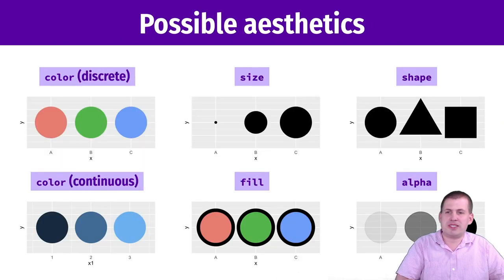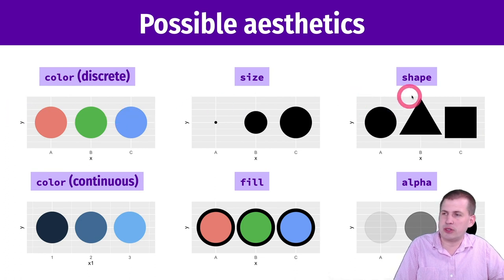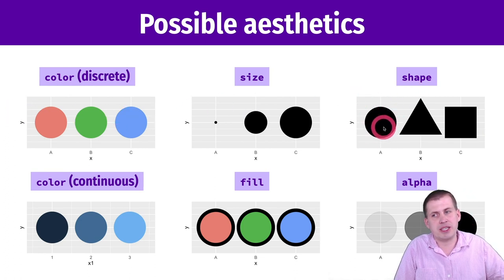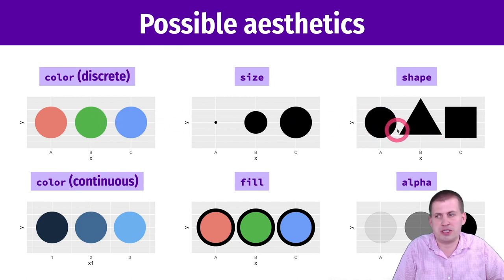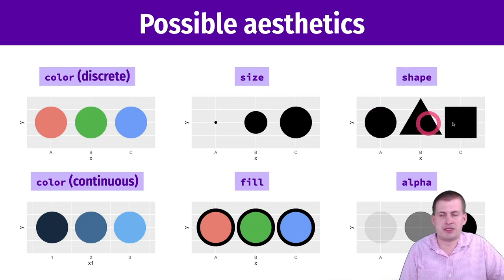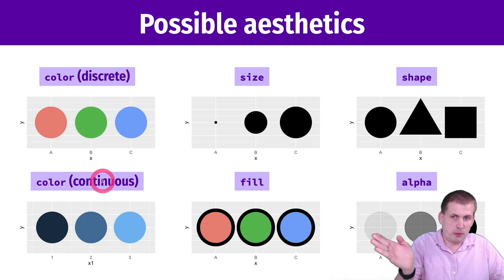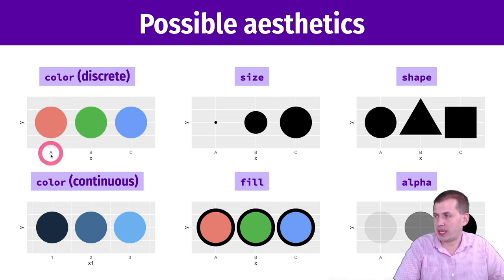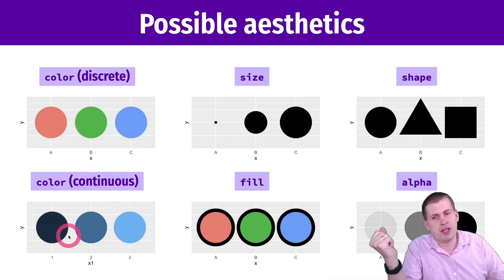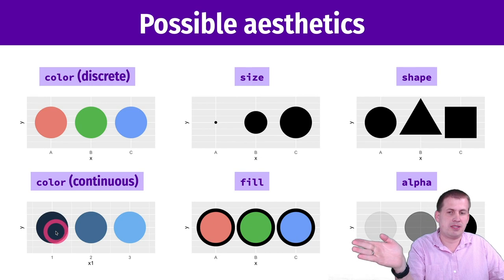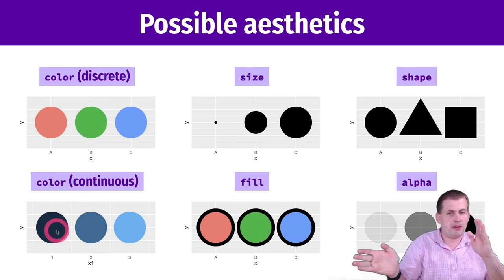There are lots of different possible aesthetics. So far you've seen size and color. You can also use different shapes — if we were printing the gapminder plot and didn't have a color printer, we could shape each point instead. Maybe a circle for Africa, a triangle for Asia, a square for the Americas. There are about 20 different shapes R can use. You can also have a continuous color scale, which is good if you have a range of numbers, as opposed to discrete colors for categories.